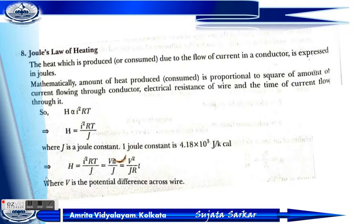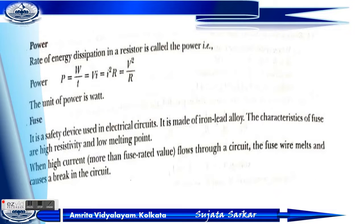We can also write H equals I²RT divided by J, and after substituting values, H equals V² divided by JR multiplied by T, where V is the potential difference across the two terminals of the wire.